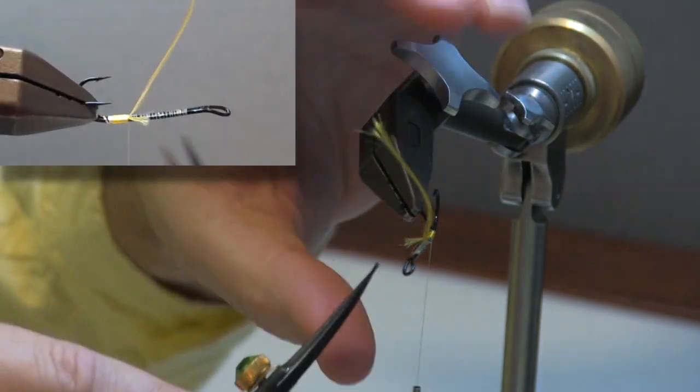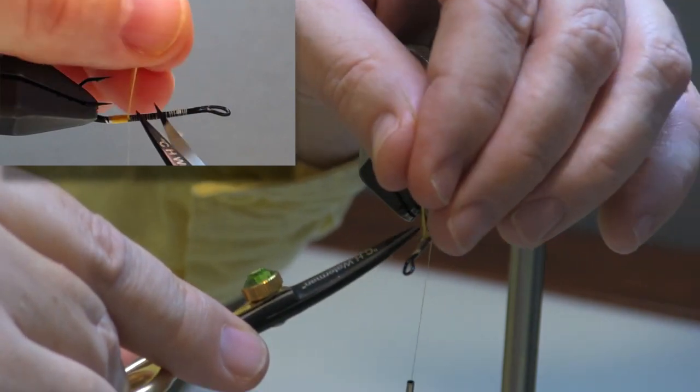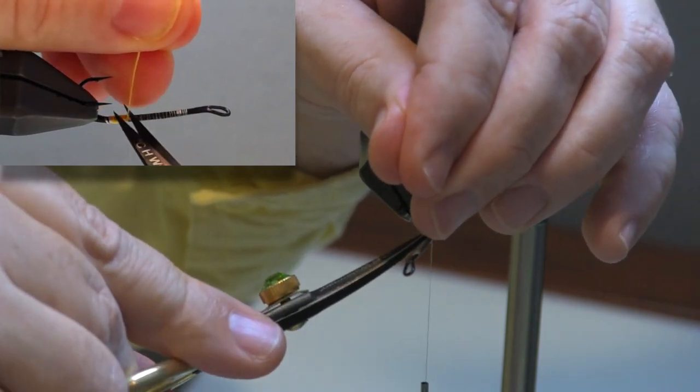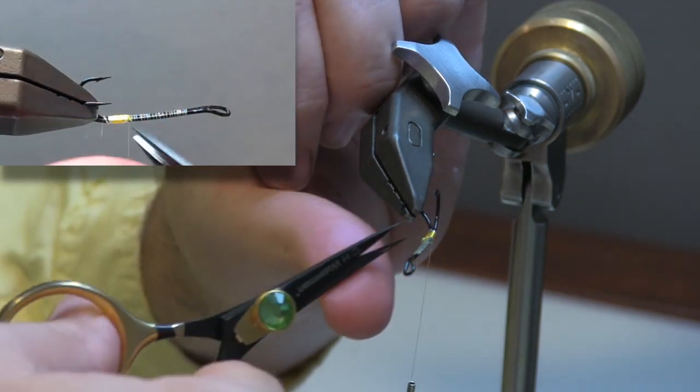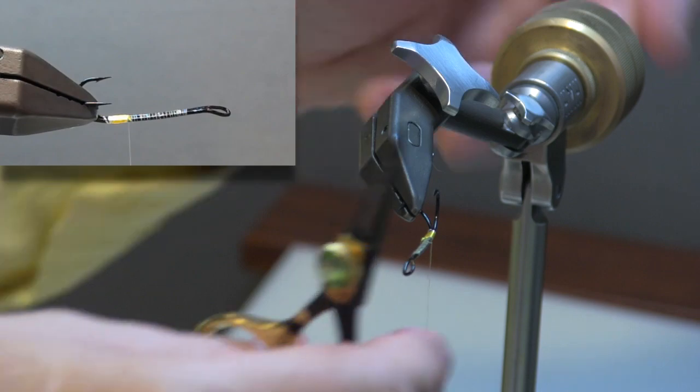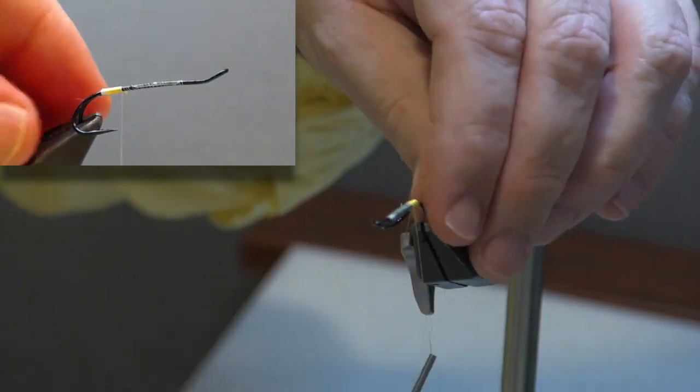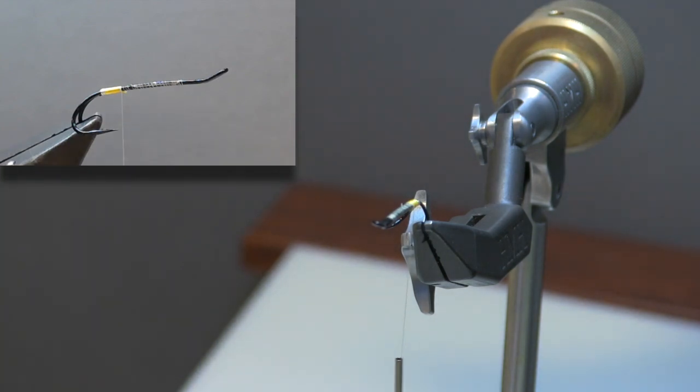And that first layer going back is just to continue to lay down a nice smooth platform, so that when you come forward with the top layer you get a very smooth look. Once we have that done, now I'll come in and trim away the waste pieces. And that is done.